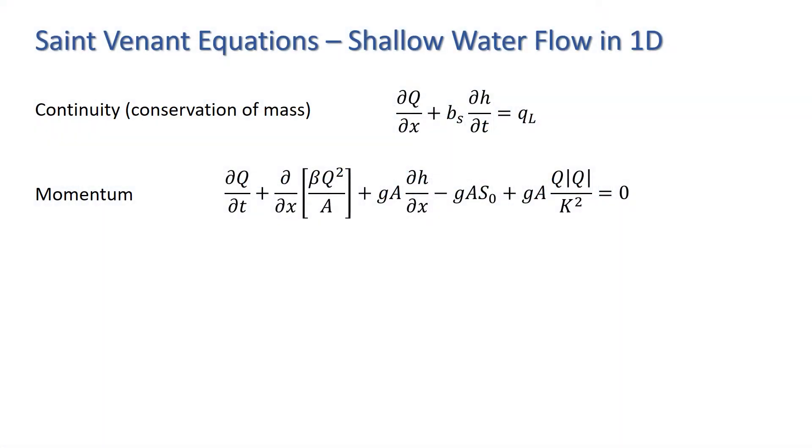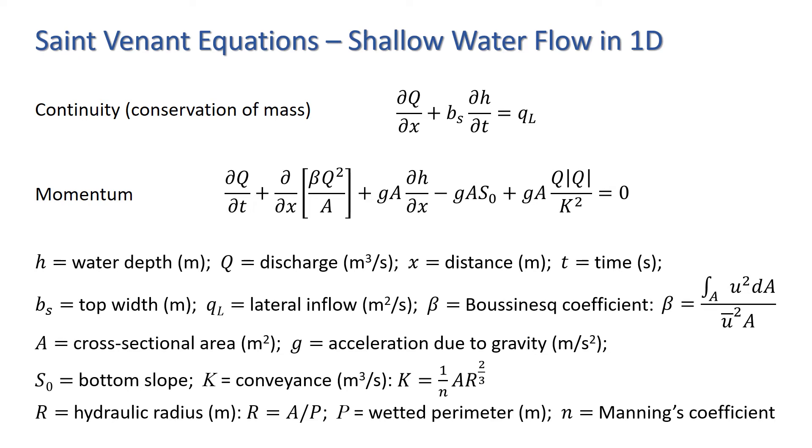The Saint-Venant equations describing shallow water flow in one spatial dimension consist of two equations covering conservation of mass and momentum. They can be expressed in full in the form shown here.